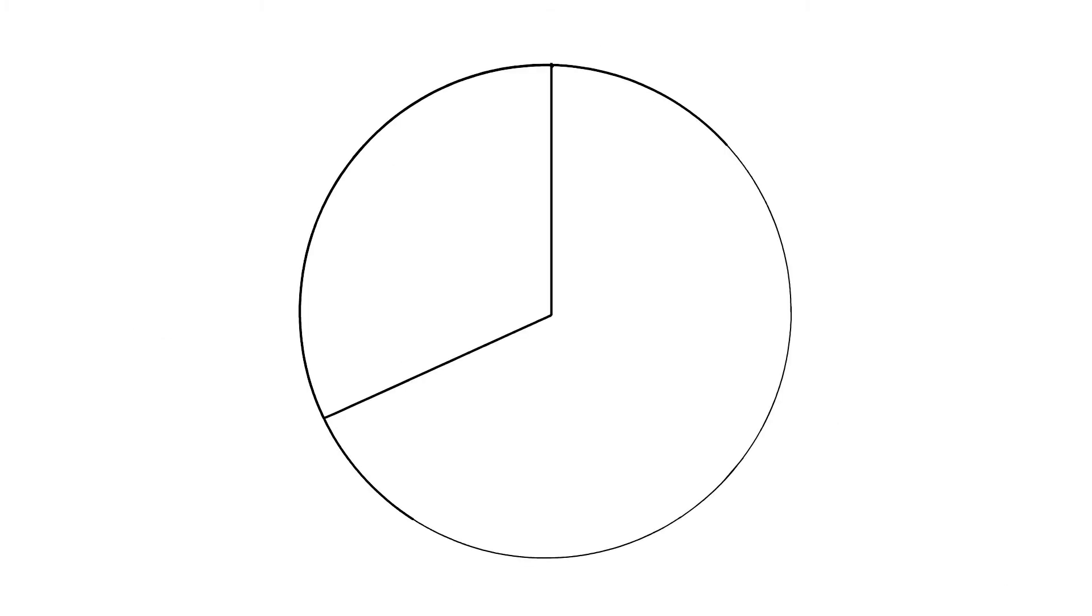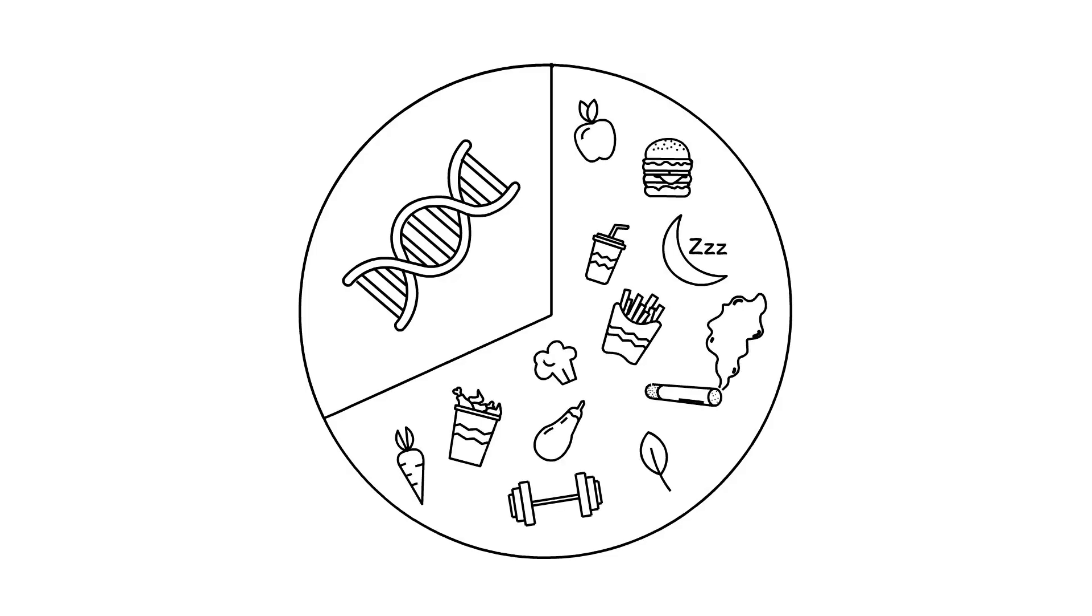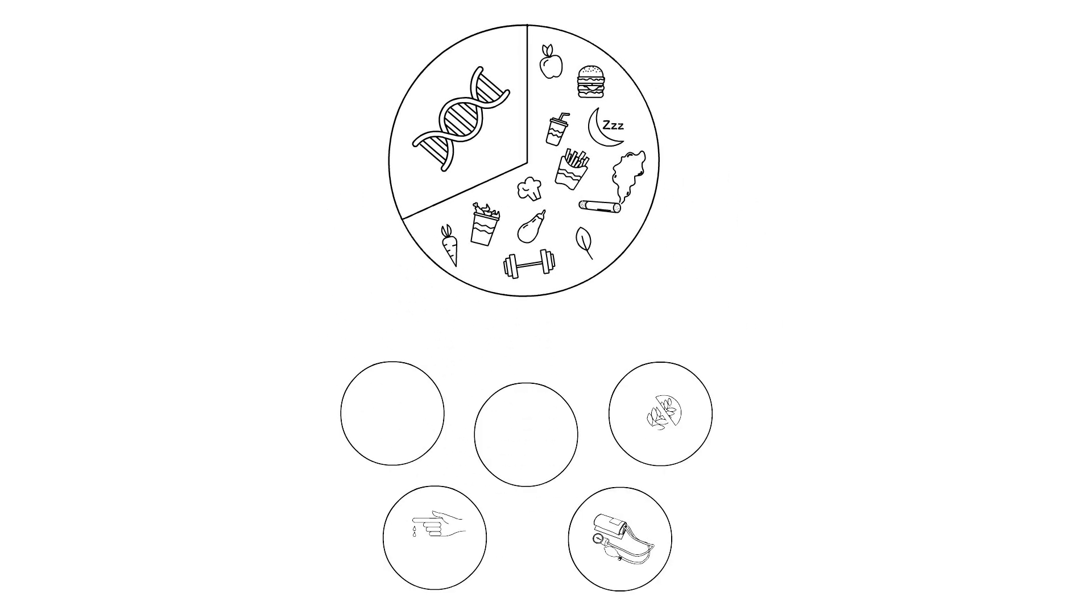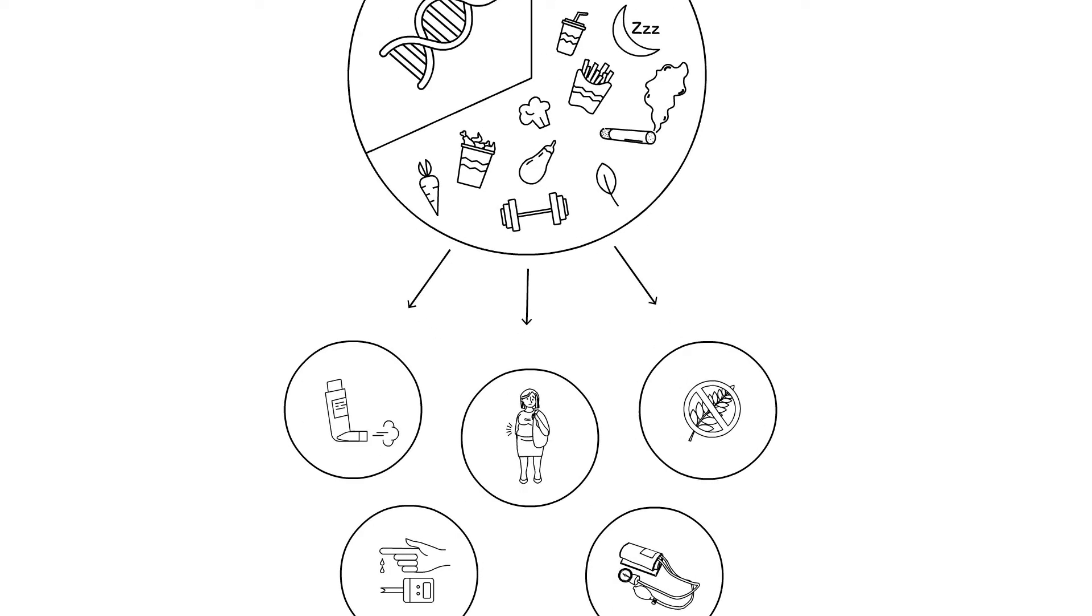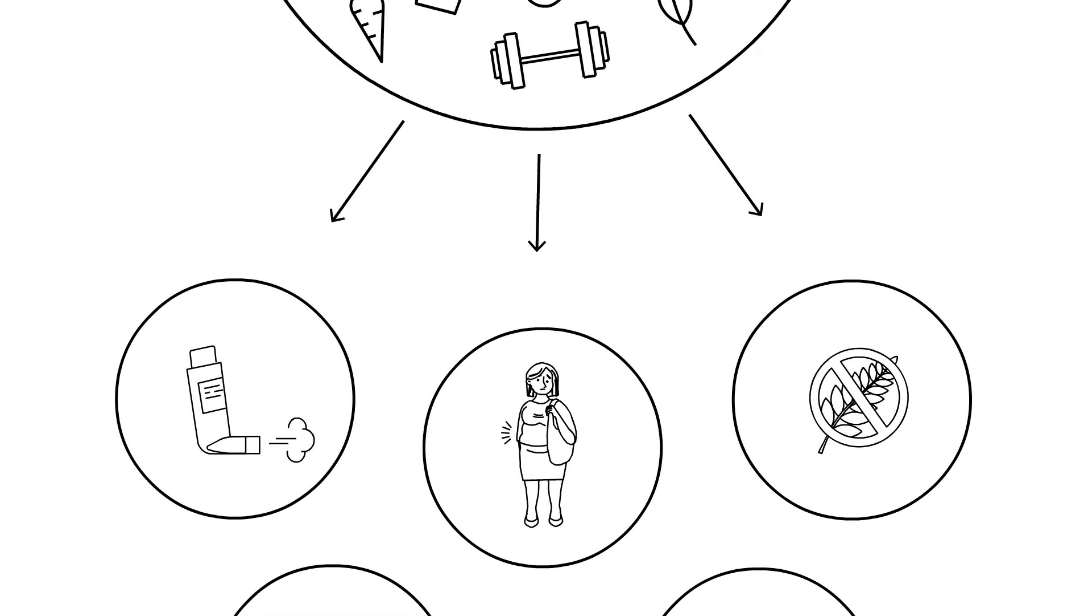But genetics is only part of the equation. Environmental effects play a large role in complex diseases. Let's extend on the obesity example.